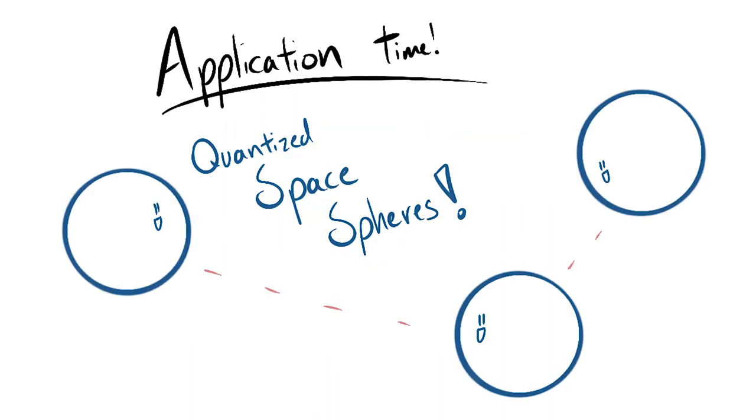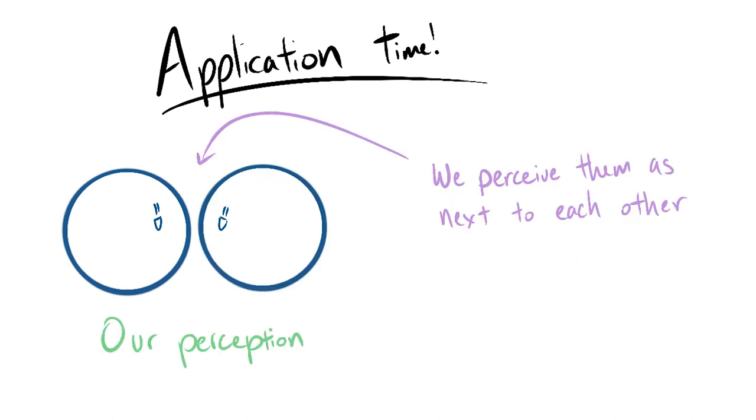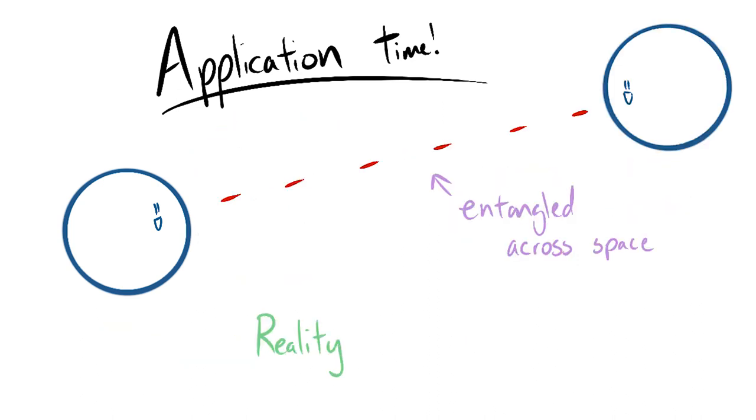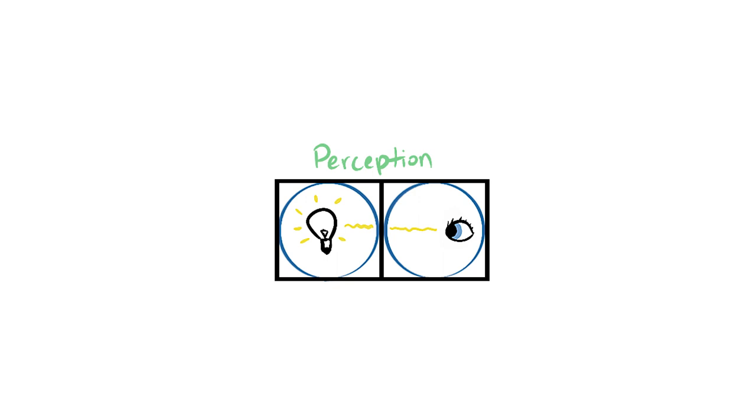This concept can be applied to the quantized space spheres from earlier. It's completely possible that the spheres in our universe are entangled so that the spheres that we perceive to be next to each other actually aren't. If we use the photon example from before, we'd perceive it to travel like this.